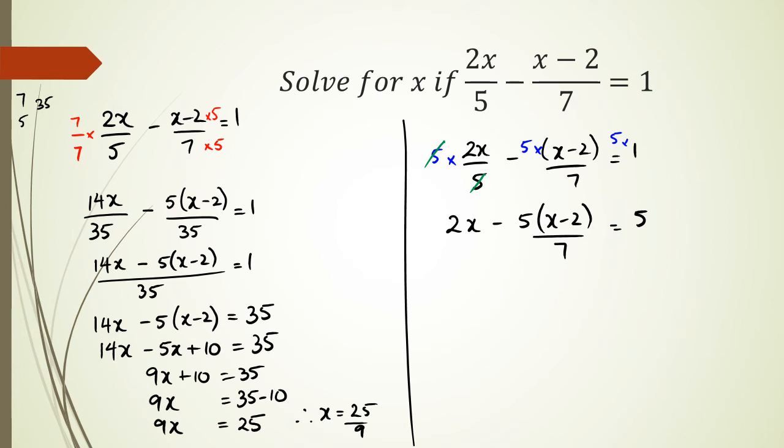Now I multiply everything by 7, because I want to get rid of this denominator 7. And what I should have is 14x minus 5 times x minus 2, because my two 7s are disappearing, and 5 times 7 is 35.